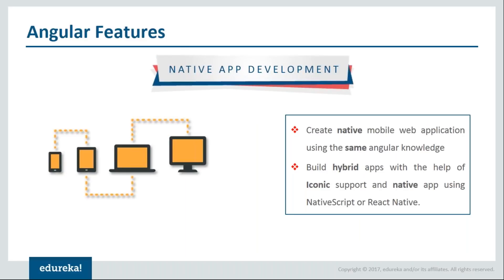You can create native mobile applications using Angular with the help of Ionic and NativeScript frameworks. It doesn't mean you have to learn native programming languages — you can build mobile apps using the same HTML, JavaScript, and CSS code you've already written for your web app. You can also build cross-platform mobile applications that are supported on both Android and iOS with the same web development skills. With Angular, this transition will be easy without hiring specialized iOS or Android developers.